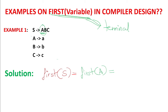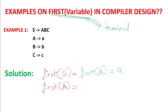So what is FIRST of A? For the A grammar, A is on the left-hand side, and on the right-hand side small a is there. Small a is a terminal. The first terminal coming on the right-hand side of capital A is small a. So FIRST of A is small a. And indirectly, FIRST of S is also small a.